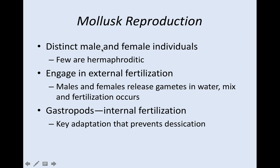Mollusc reproduction: there are distinct male and female individuals, but there are a few species that are hermaphroditic. They engage in external fertilization, which means they release gametes in water and mix. Gastropods, however, have internal fertilization, which is a key adaptation to prevent drying out because they live in moist areas on land.